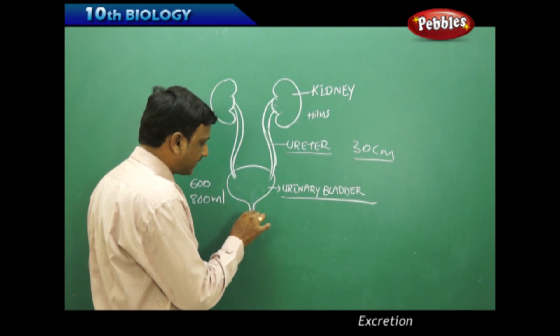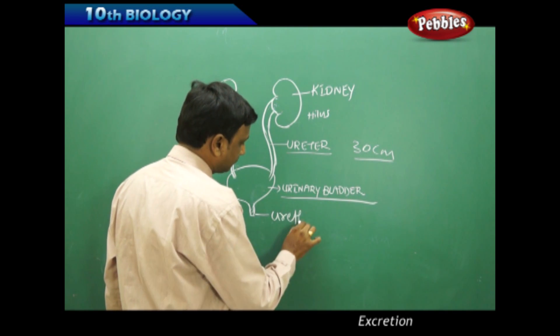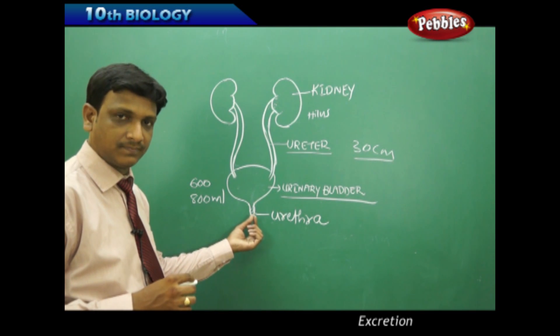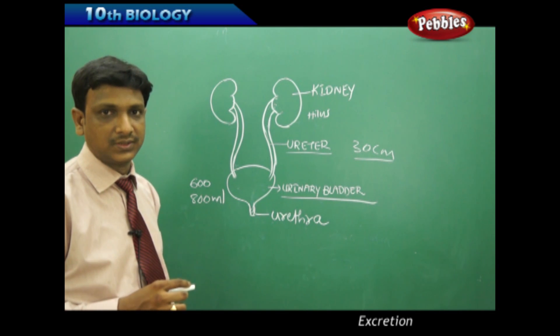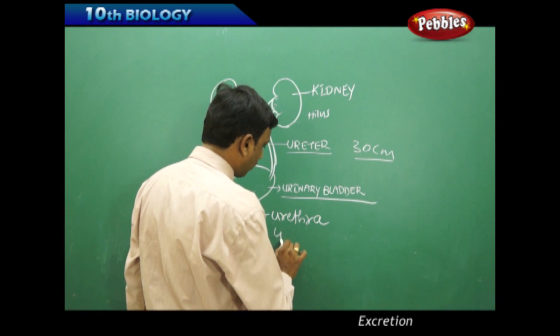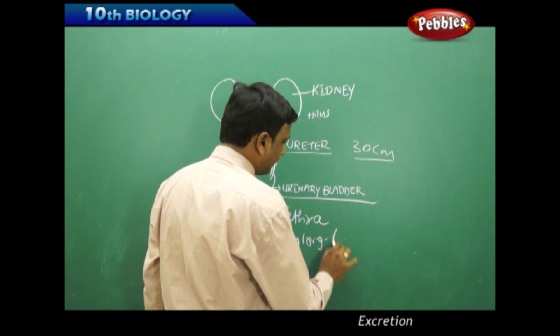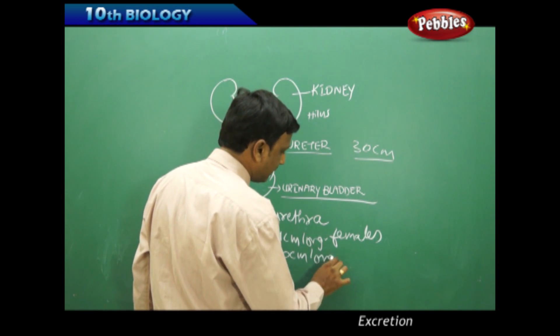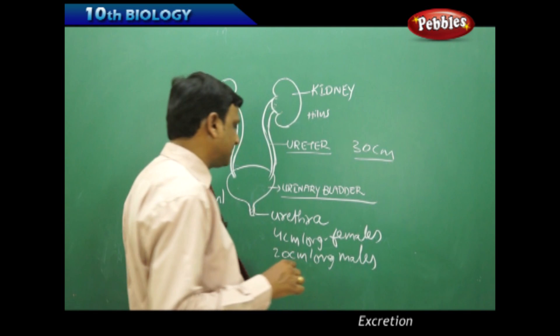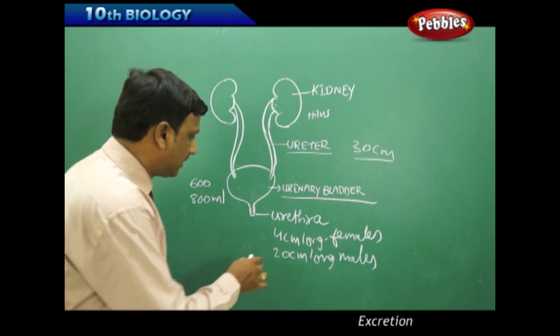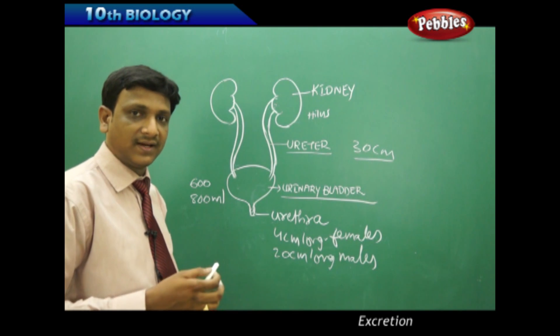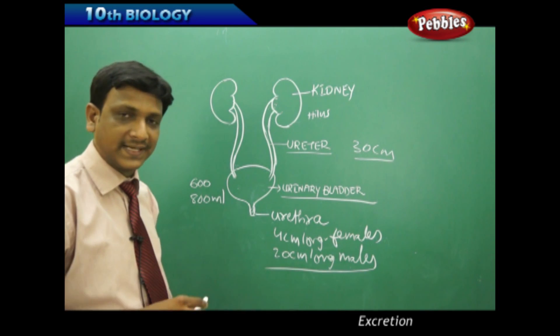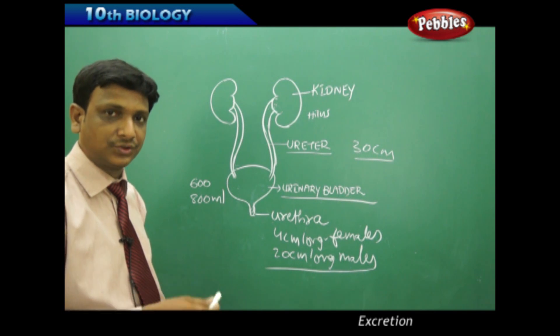The urinary bladder has an outlet called urethra. Urethra is a passage through which the urine passes out. This urethra is 4 cm long in females, 20 cm long in males. In females, the urethra and the genital ducts are separate. Whereas in males, the genital and urinary duct is the same. The urethra passes through that common duct.